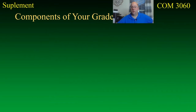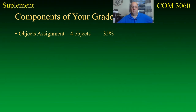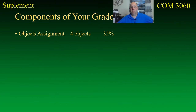Components of your grade — this is a good place to start. The objects assignment is one of the first things on the syllabus and it comprises four different objects that you have to create. Collectively that covers 35% of your grade, making it a very important assignment. If you don't do this assignment, the highest you could possibly get in the class would be somewhere in the C range.